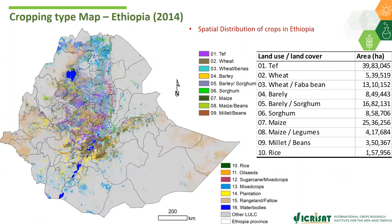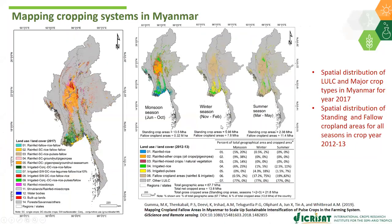Similarly, we have done work in Africa, for example in Ethiopia, showing the distribution of major crops like wheat across the country. In Southeast Asia, we have done mapping from 2011–12 to the present, with validated results for 2017 and 2012–13. One focus in Myanmar was identifying fallow areas where we can disseminate short-duration legume crops.